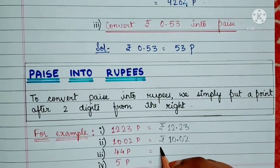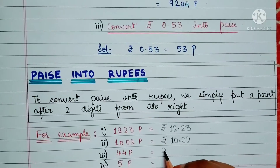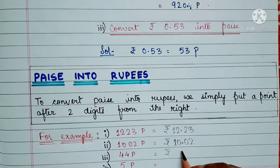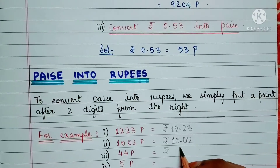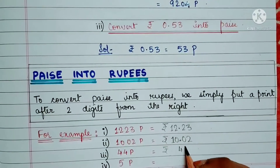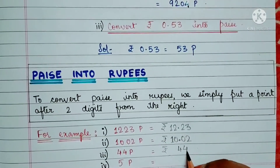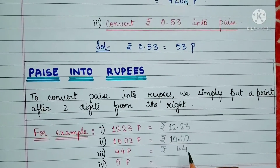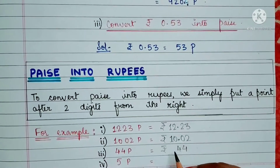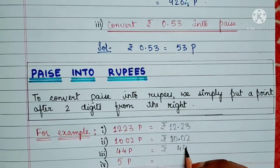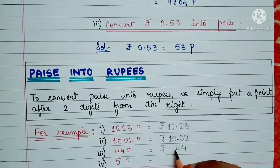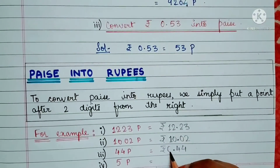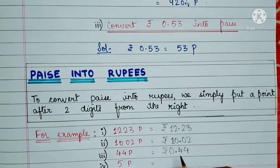Next example. For conversion into rupees, we will first write the symbol of rupees, then write the number, and put a dot just after 2 digits from the right. First digit, second digit, and here we put a dot. Since there is nothing in rupees, we will write a 0.